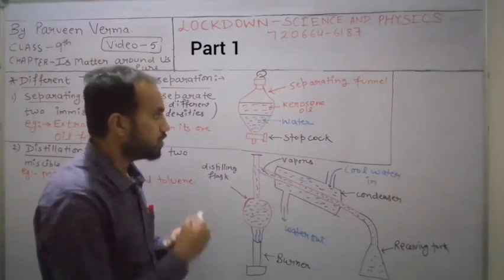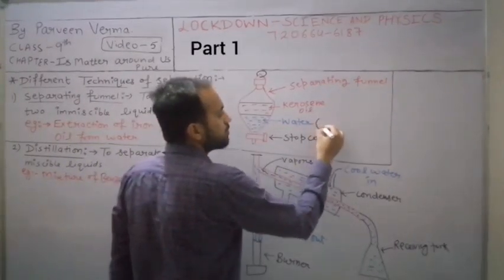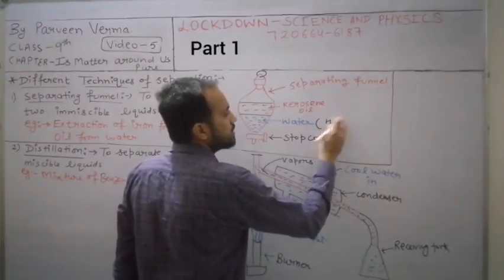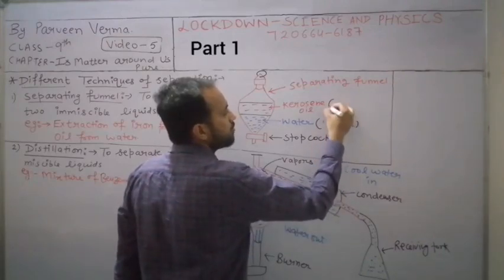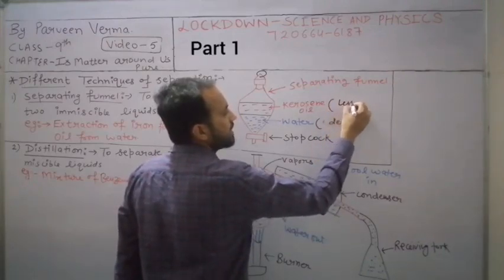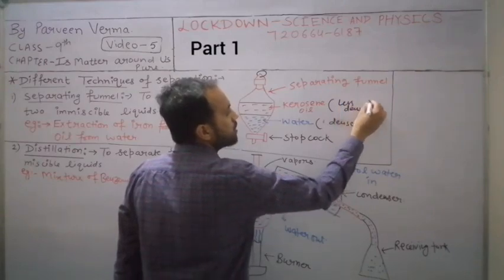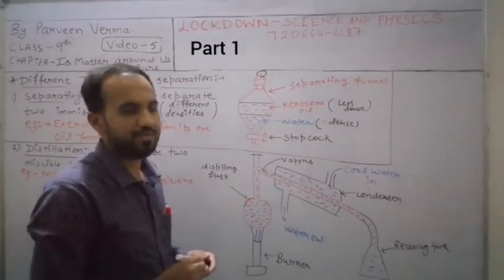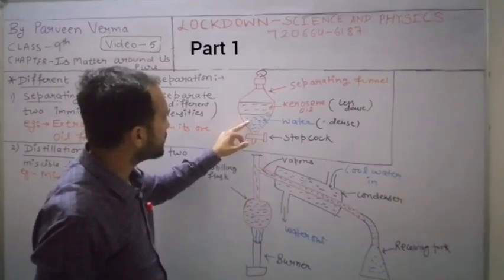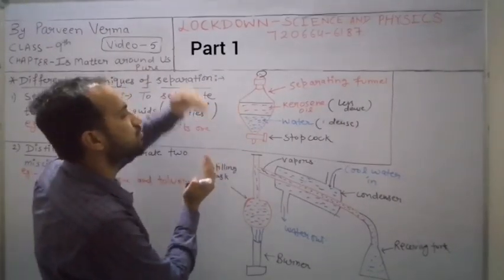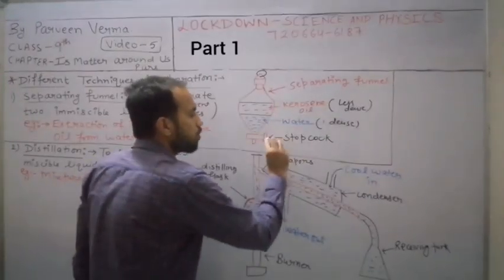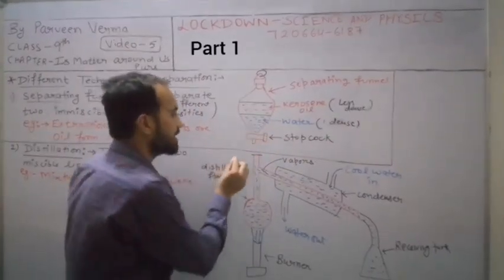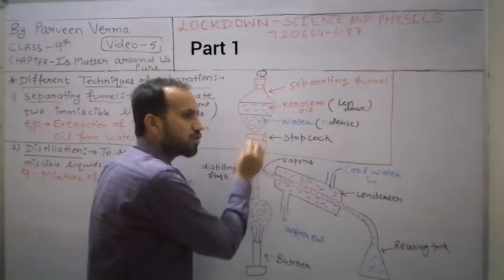In the example I've taken of water and kerosene oil, water is more dense and kerosene oil is less dense. So water will settle at the bottom. After 15 or 20 minutes, the water will form one layer at the bottom and kerosene oil will form another layer on top.